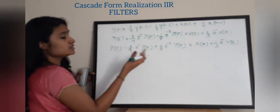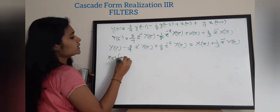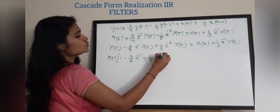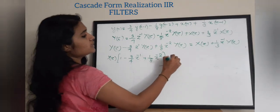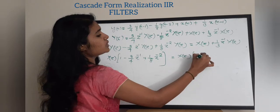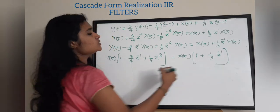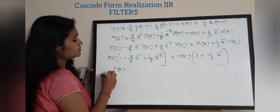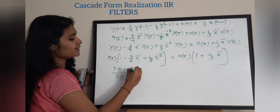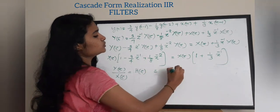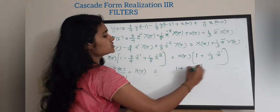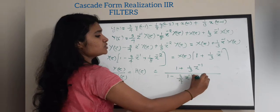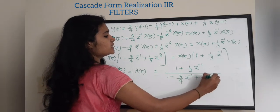Take X(z) common from the right-hand side terms and Y(z) common from the left-hand side terms: Y(z) · [1 − 3/4 z⁻¹ + 1/8 z⁻²] = X(z) · [1 + 1/3 z⁻¹]. Now form Y(z)/X(z), which equals H(z), your transfer function: H(z) = (1 + 1/3 z⁻¹) / (1 − 3/4 z⁻¹ + 1/8 z⁻²).